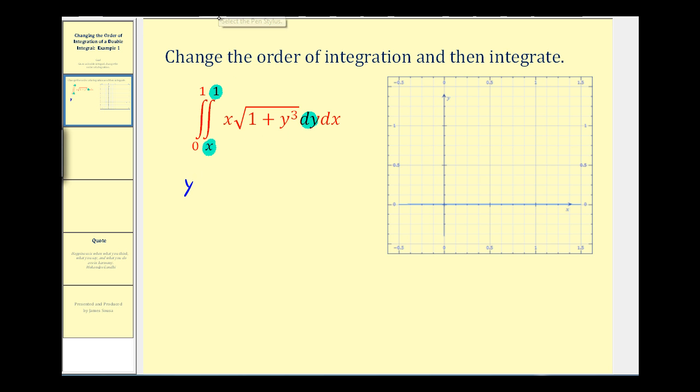This means that y is greater than or equal to x and less than or equal to one. We know y is greater than or equal to the lower limit of integration, x, and it's also less than or equal to the upper limit of integration of one. And also that x is on the closed interval from zero to one, or that x is greater than or equal to zero and less than or equal to one.